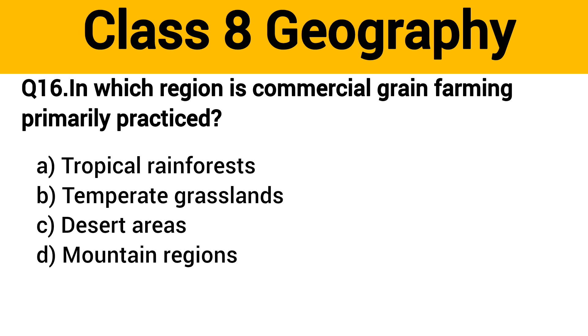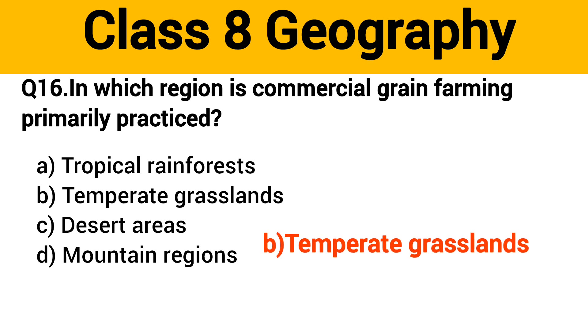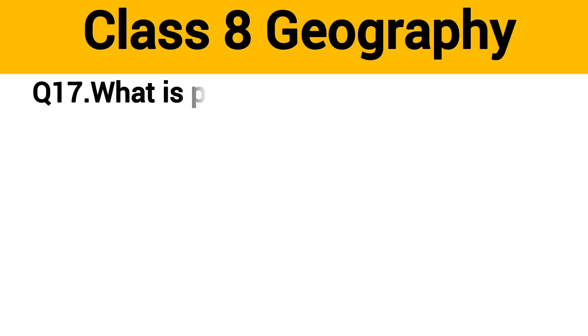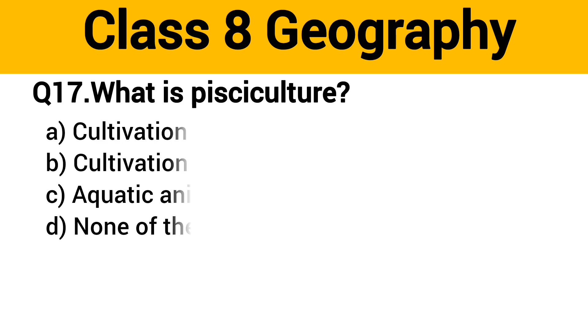Question number 15: What is commercial farming? The right answer is option B: farming aimed at producing crops for sale. Question number 16: In which region is commercial grain farming primarily practiced? The right answer is option B: temperate grasslands.